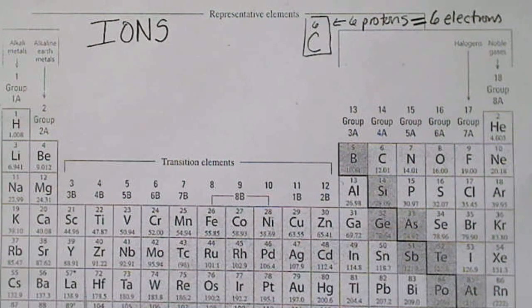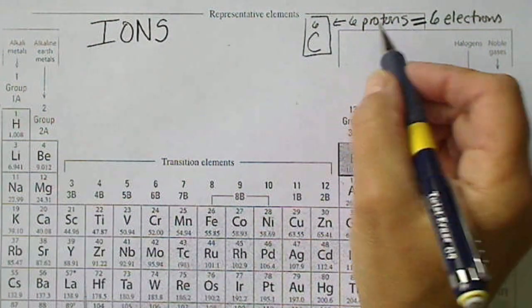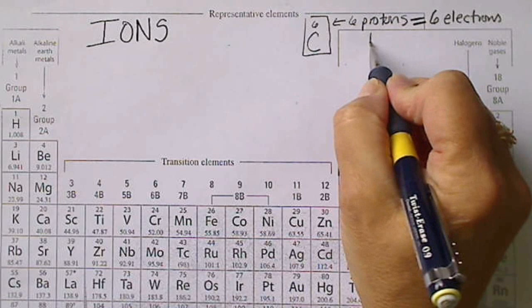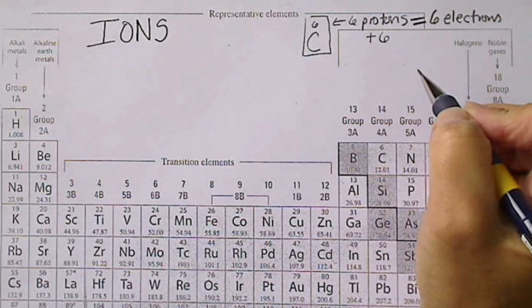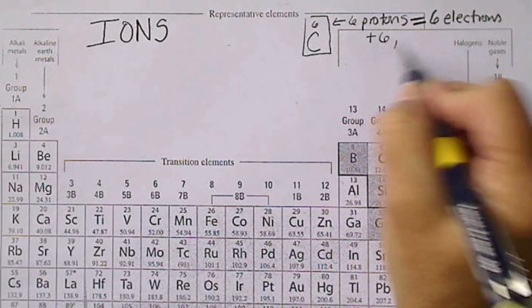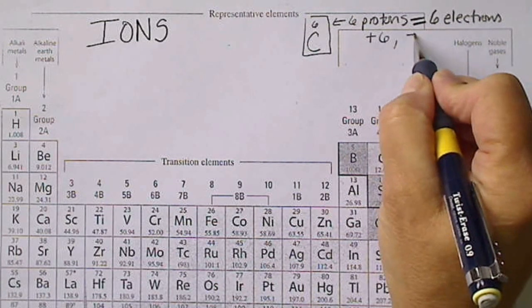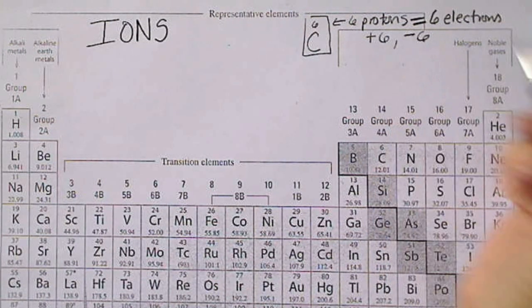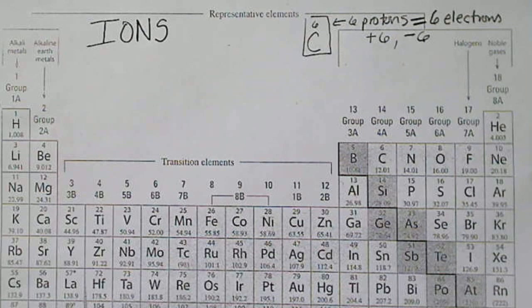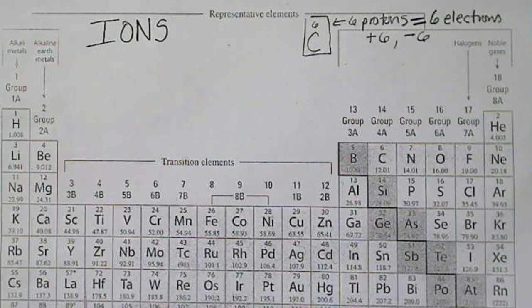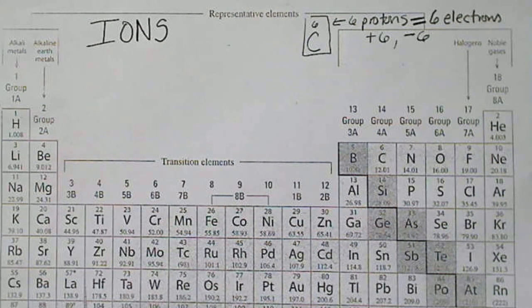So any atom on the periodic table is neutral. Protons would be like having a plus six charge, and in order to balance out the charge, the six electrons would give the molecule or the atom a negative six charge. The overall charge on any atom on the periodic table is zero.